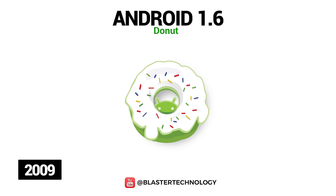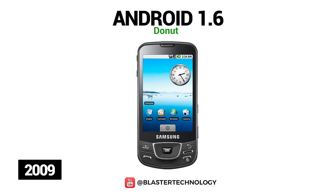Also in 2009, Google released Android 1.6 Donut. New features included support for CDMA-based networks, and importantly, support for different screen sizes, meaning phone manufacturers could create devices with different screen sizes. Android 1.6 Donut also included the Quick Search Box, quick switching between cameras, and a power controlling widget to manage Wi-Fi, Bluetooth and GPS.